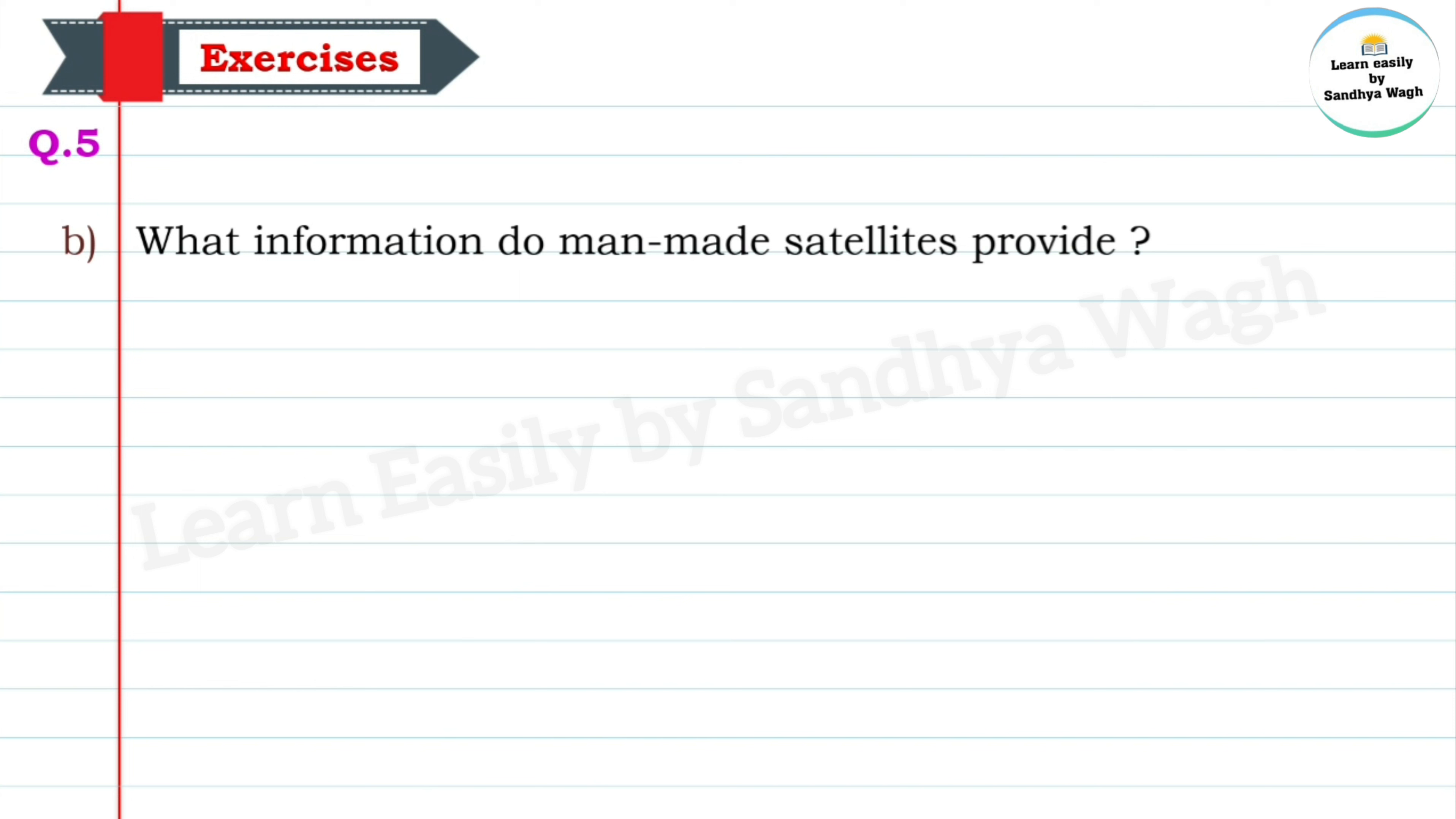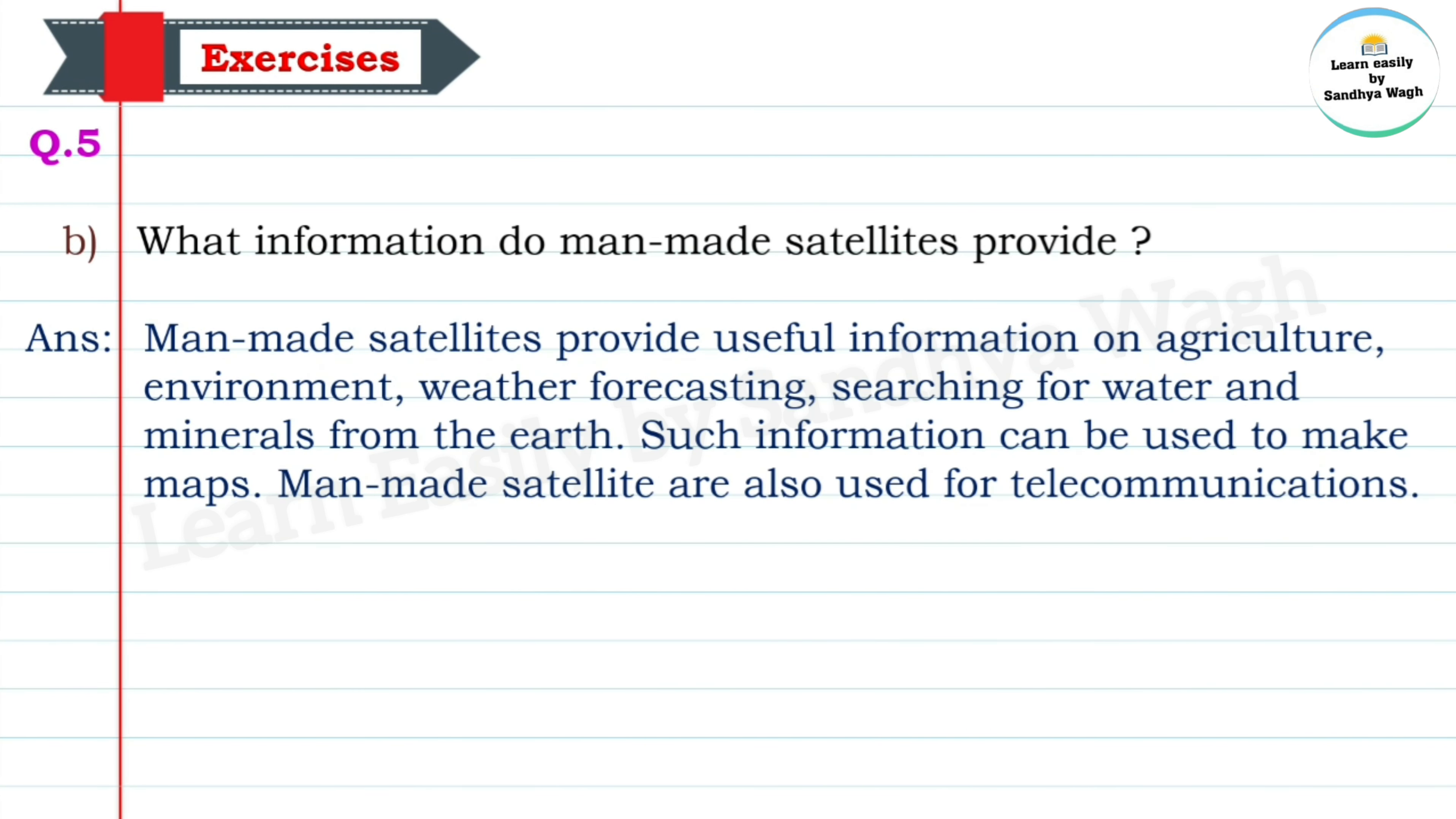Question 5b: What information do man-made satellites provide? Answer: Man-made satellites provide useful information on agriculture, environment, weather forecasting, and searching for water and minerals from the earth. Such information can be used to make maps. Man-made satellites are also used for telecommunications.